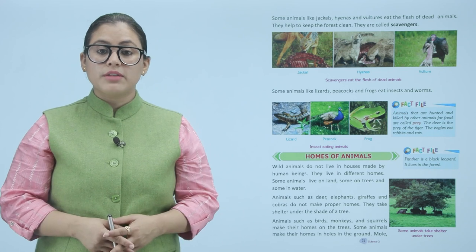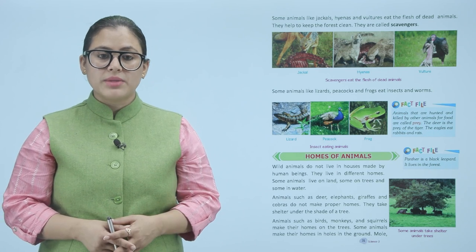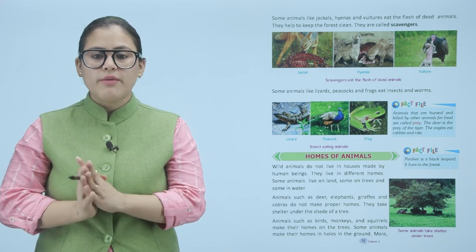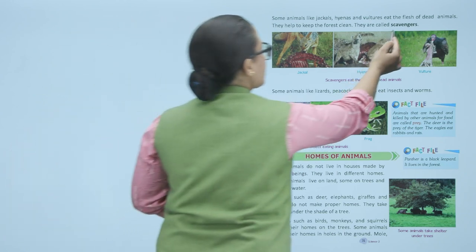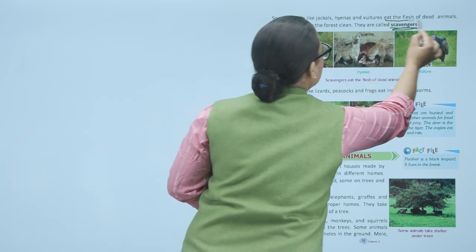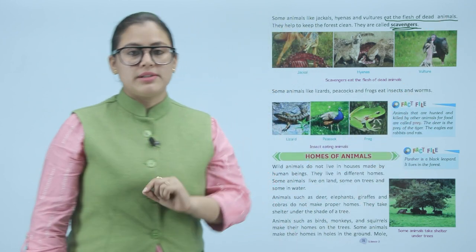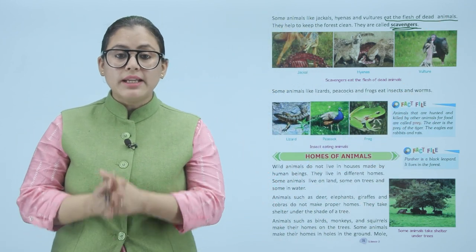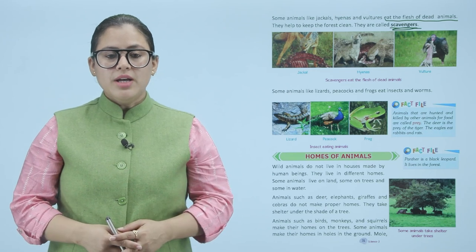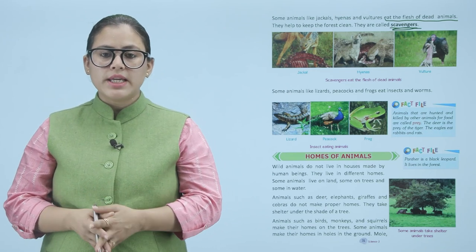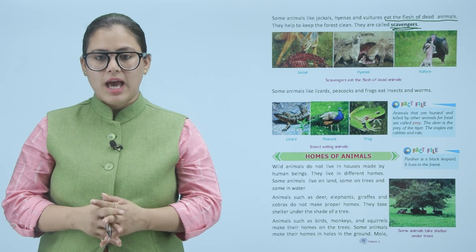Some animals like jackals, hyenas, and vultures eat the flesh of dead animals. They help to keep the forest clean. They are called scavengers. Scavengers are animals which eat the flesh of dead animals — by doing so they clean the forest area. Some animals like lizards, peacocks, and frogs eat insects and worms.